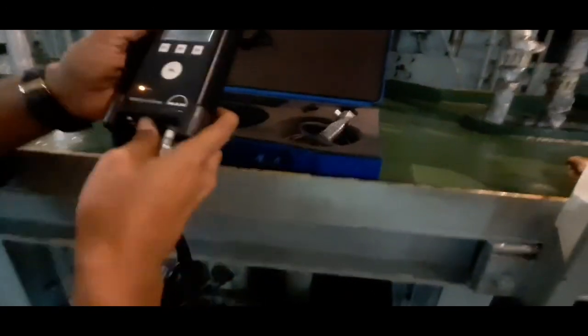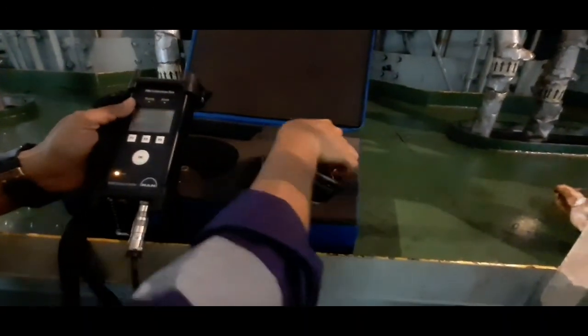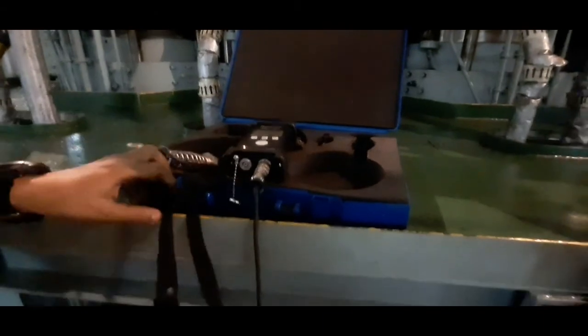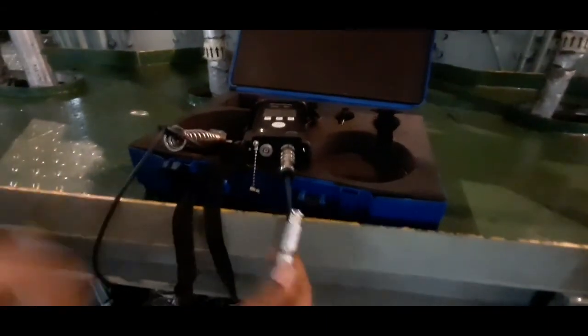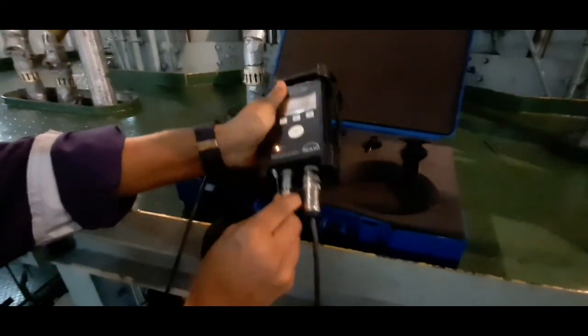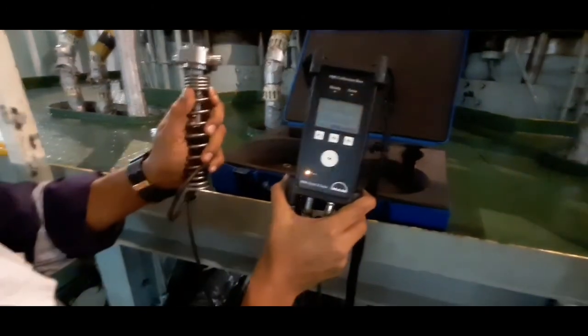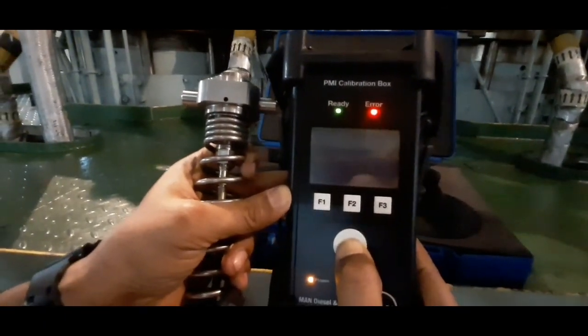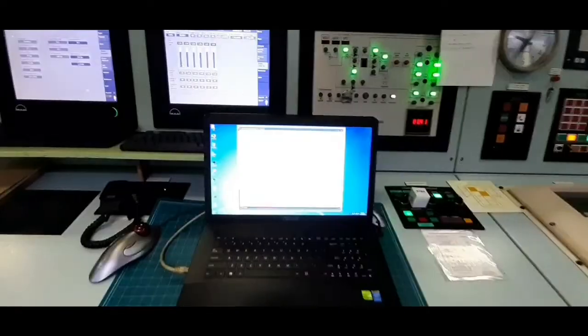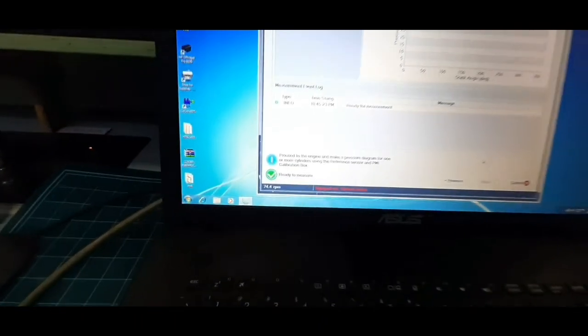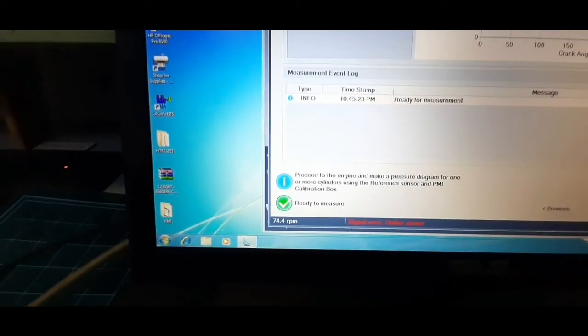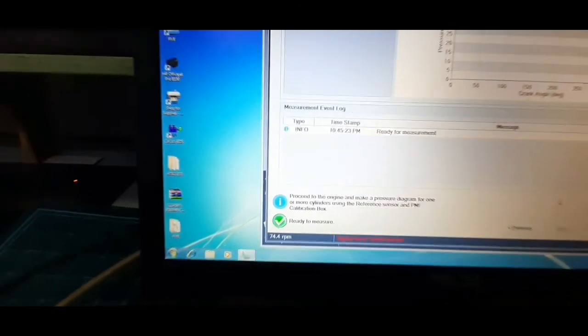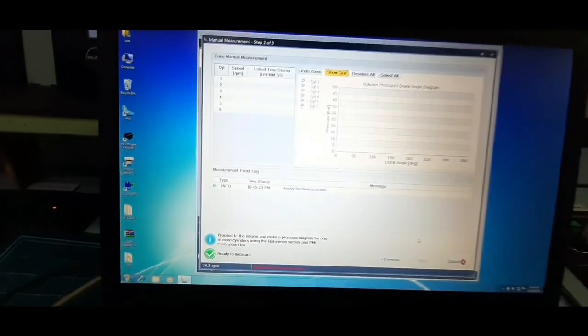Now you need to connect the PMI transducer to the PMI controller. After this, press the OK button on the PMI controller and your PMI calibration box is ready to measure the pressures inside the cylinder head. Once you set up the connection between the junction box, PMI controller, and the transducer, your laptop display will indicate ready to measure on the left corner of the page. Now proceed to the engine.